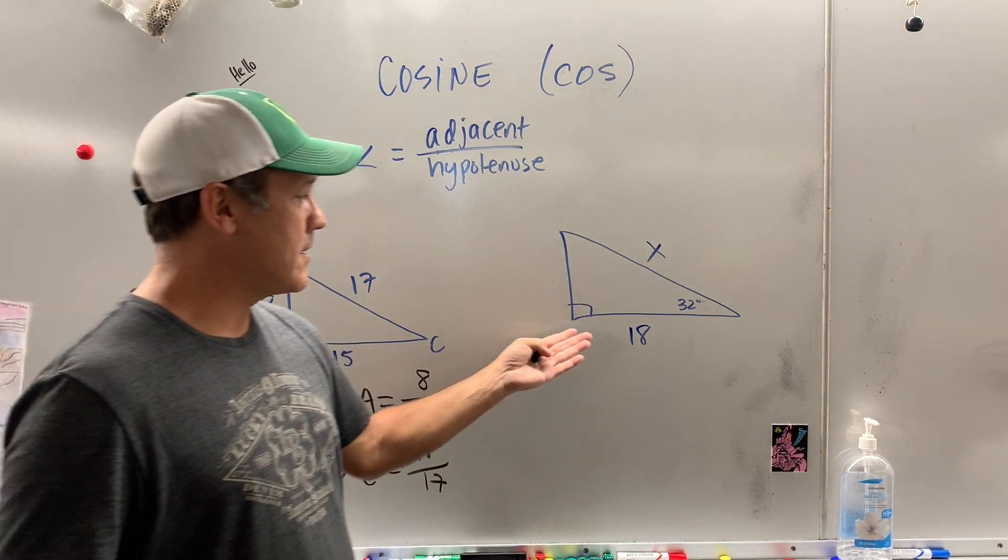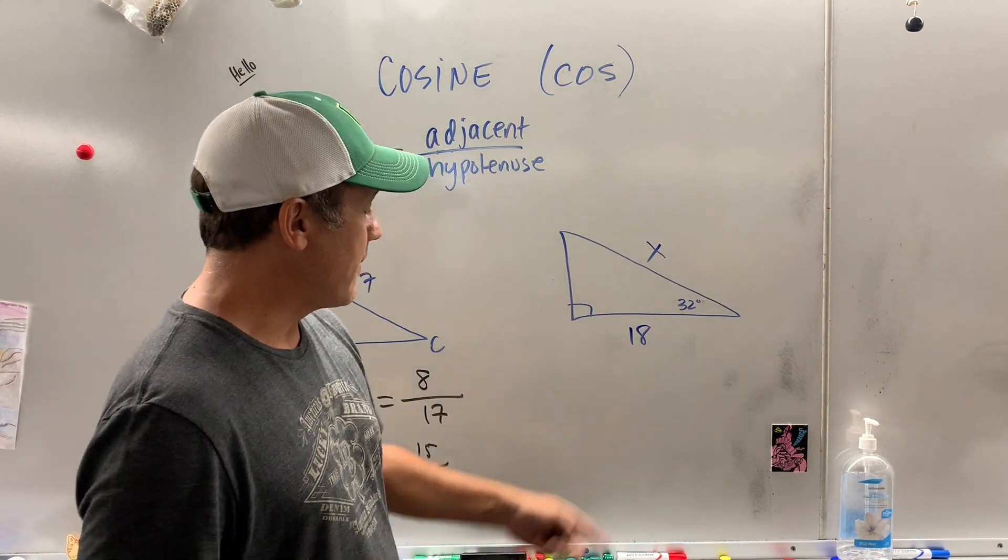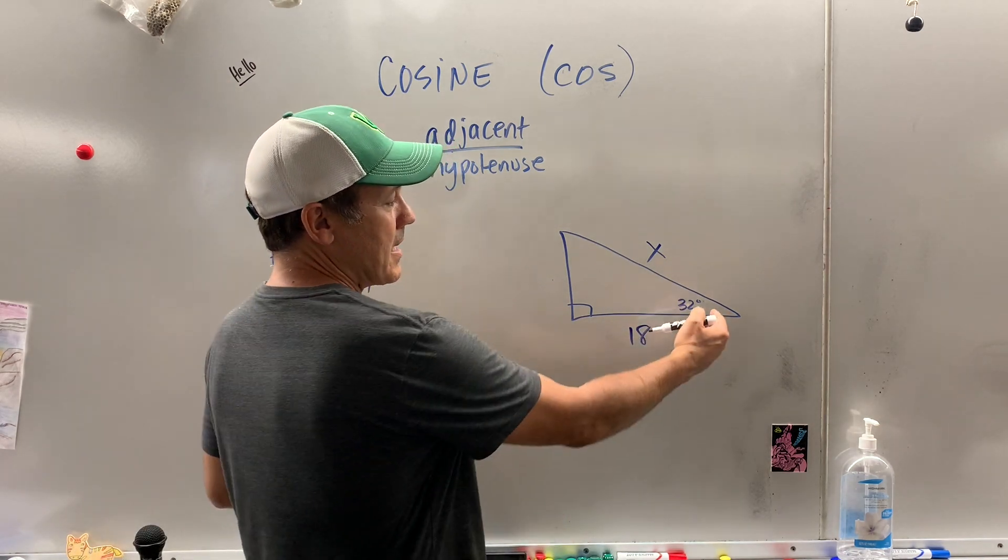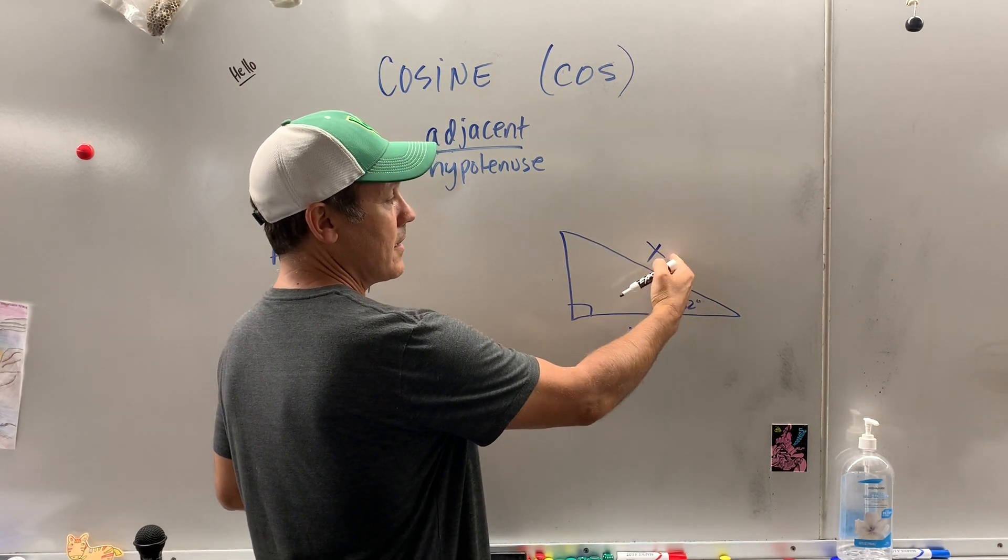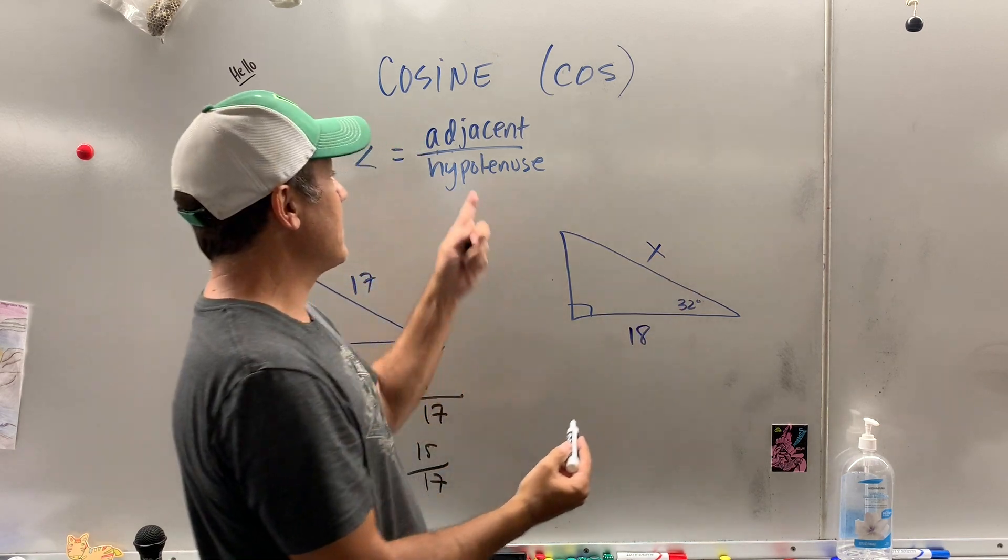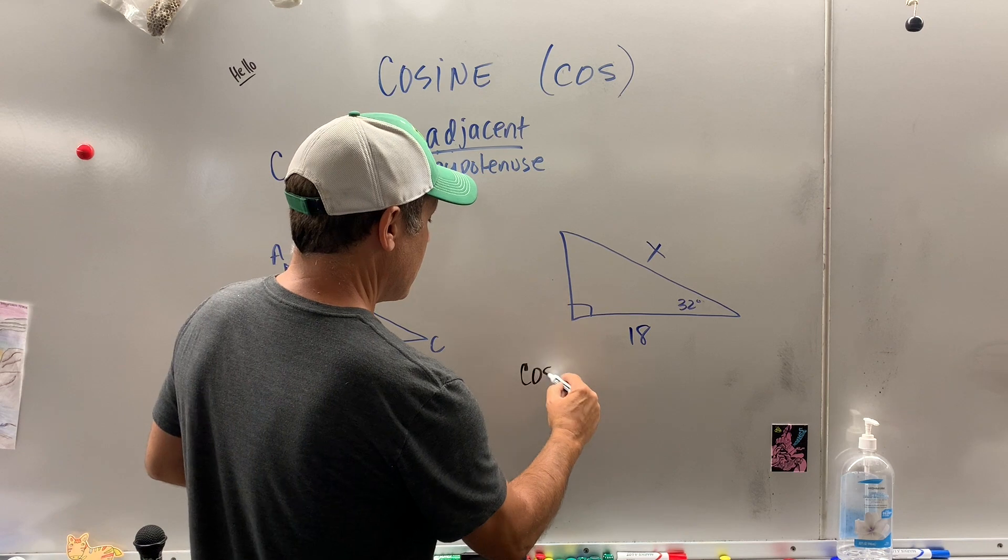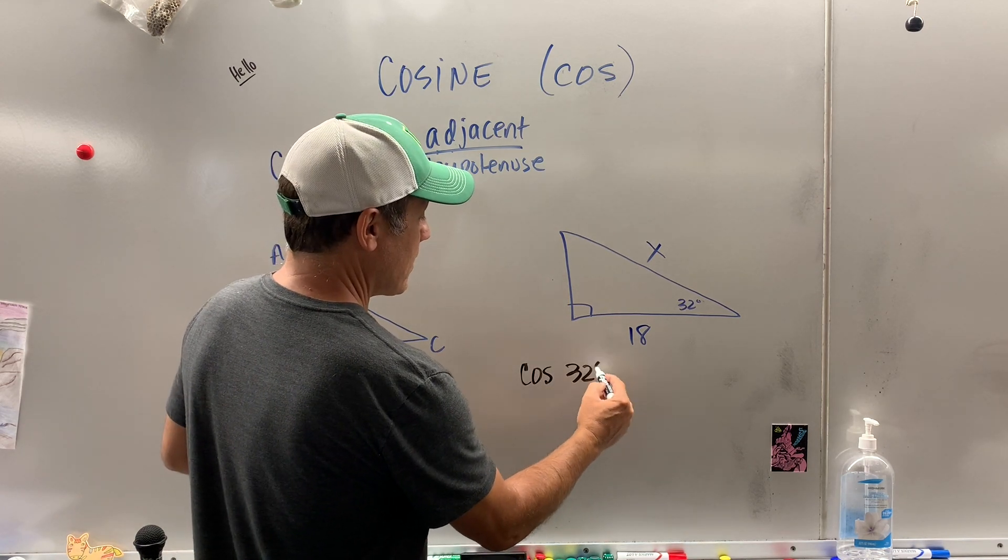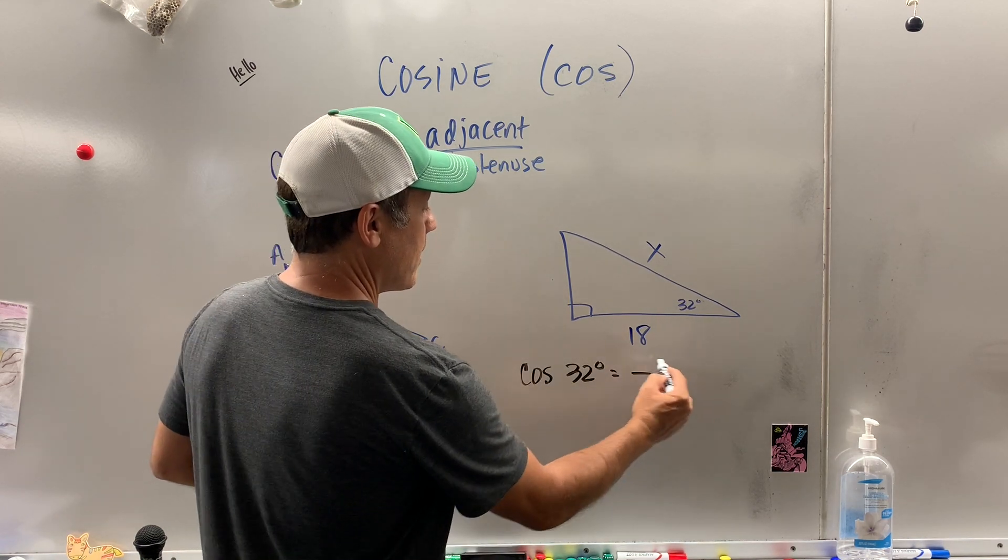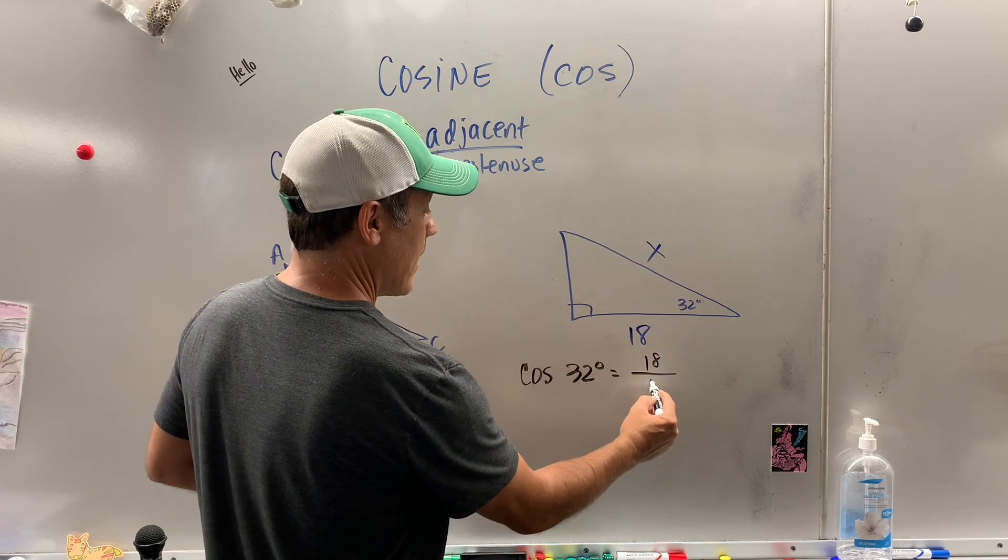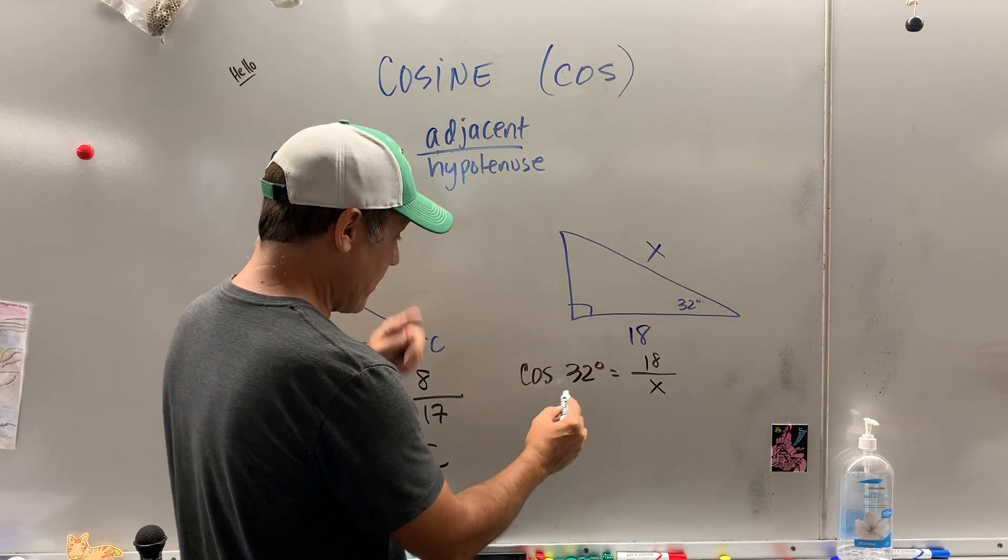Now we could use that to solve problems. If I'm looking at this, here's the angle I know. So this 18 is the adjacent. The X is the hypotenuse, so that is cosine, adjacent over hypotenuse. So I say cosine of 32 degrees is equal to adjacent over hypotenuse. Put this over 1.